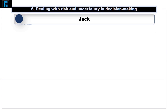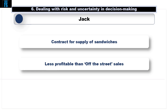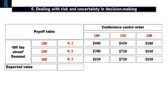Let's remind ourselves about Jack, the sandwich shop owner. He was asked if he would like to sign a contract with a local conference centre for the regular daily supply of sandwiches, which although they weren't as profitable as off-the-street sales, nevertheless helped use some spare capacity. We constructed a payoff table showing the contribution depending on the decision Jack makes across the top and the risky variable down the left-hand side. We concluded that if Jack was risk neutral, he would make his decision using expected values, on the balance of probabilities, calculated by multiplying the outcome by the probability of its occurrence.